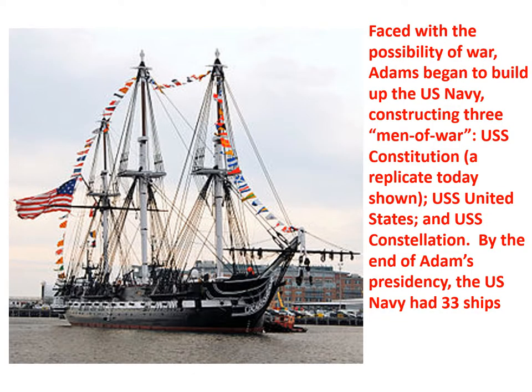Faced with the possibility of war with France, Adams began to build up the U.S. Navy, constructing three men-of-war — big battleships comparable to aircraft carriers today. The three built were the USS Constitution, the USS United States, and the USS Constellation. By the end of Adams' presidency, the U.S. Navy had 33 ships. Congress also authorized a new army of 10,000 men for three years and called ex-president Washington out of retirement to be the commander.